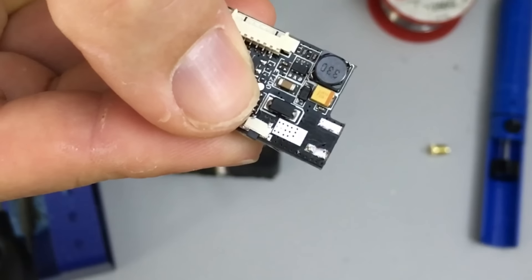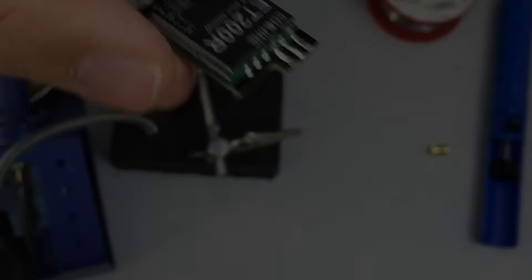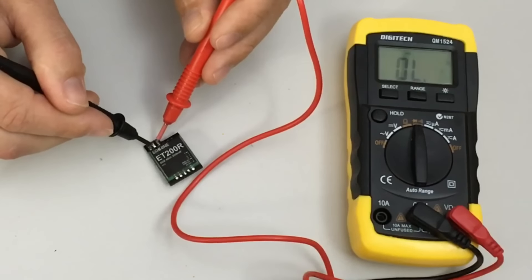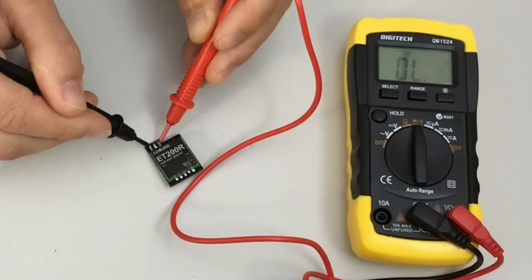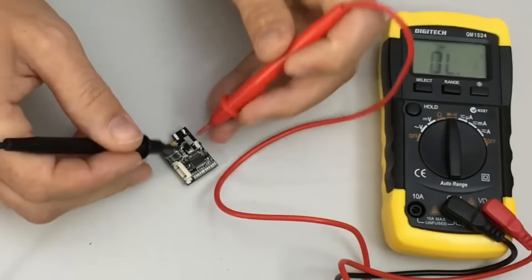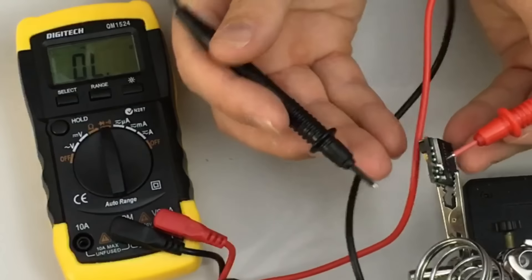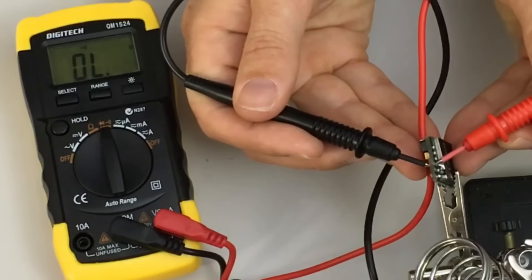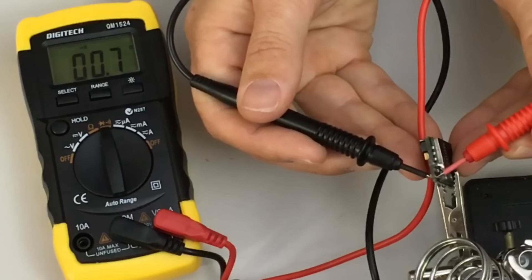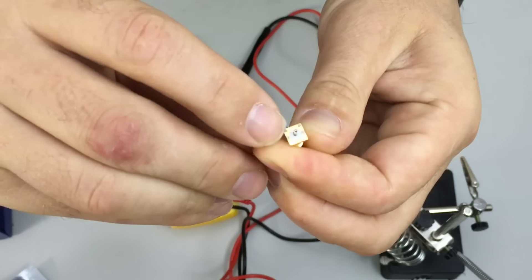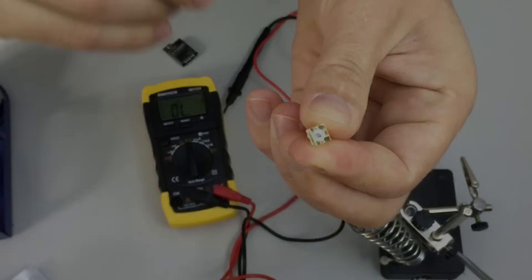Now with the bulk of it removed, I can check for continuity between the different points. I want to identify which points are earth and which is the centre pin that doesn't have continuity to the other four. So there's my four outer pins as I've cut them off. I have continuity on the board between each of those.